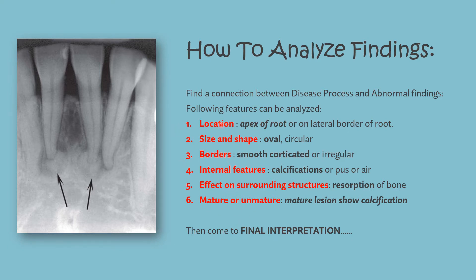The first finding to analyze is location — the apex of the root or any lateral border of the root can be a location, so the clinician must check where the lesion is occurring. Next is size and shape: whether the lesion is oval or circular. Then borders — the clinician must observe whether the border is smooth or irregular, as many lesions have smooth surfaces and many have irregular surfaces, helping us differentiate between them.